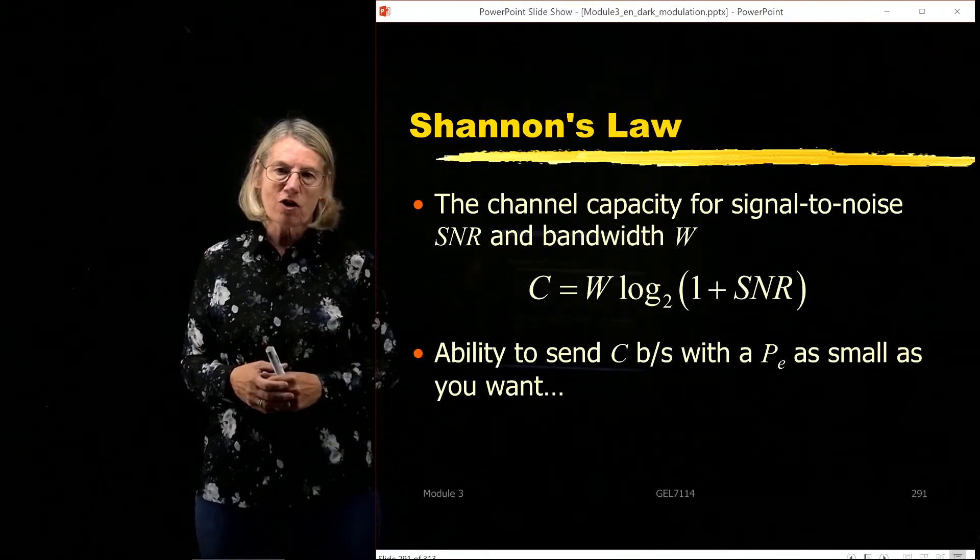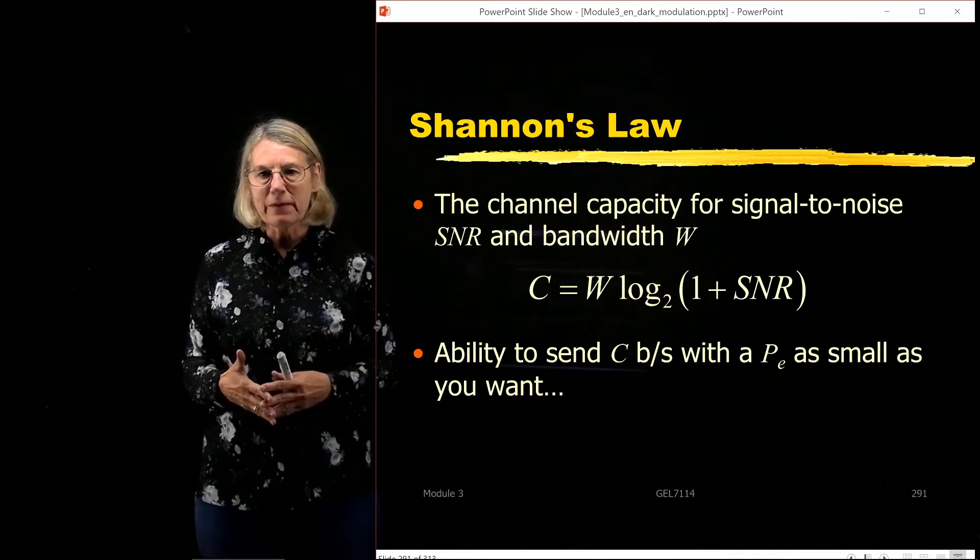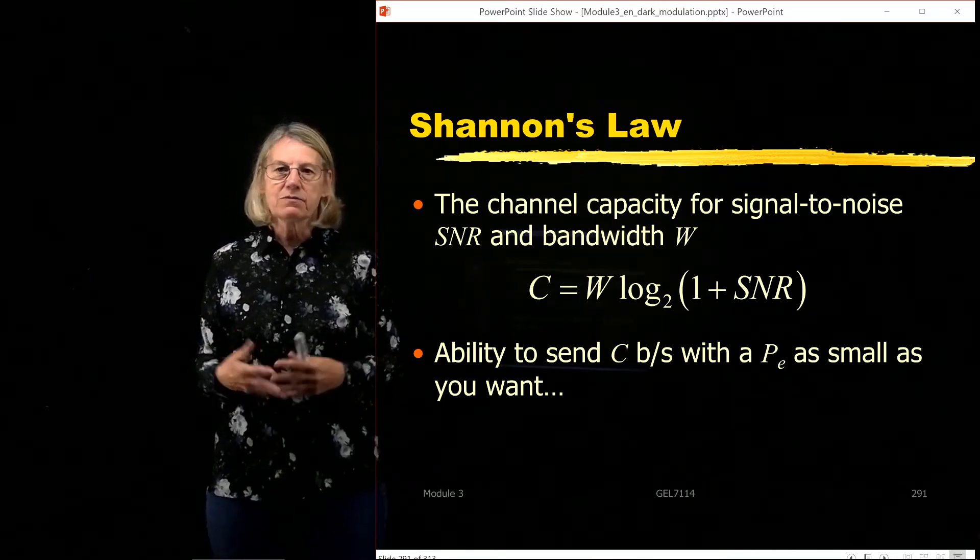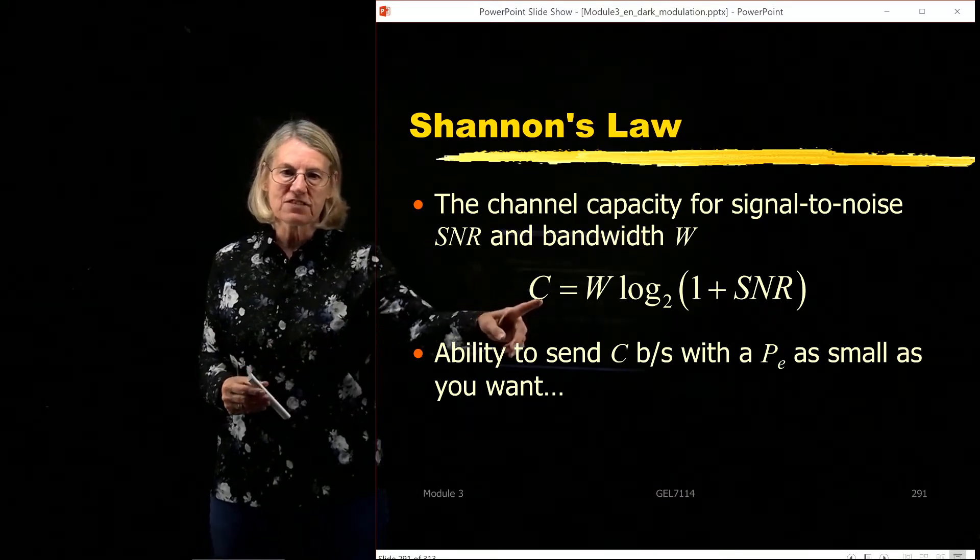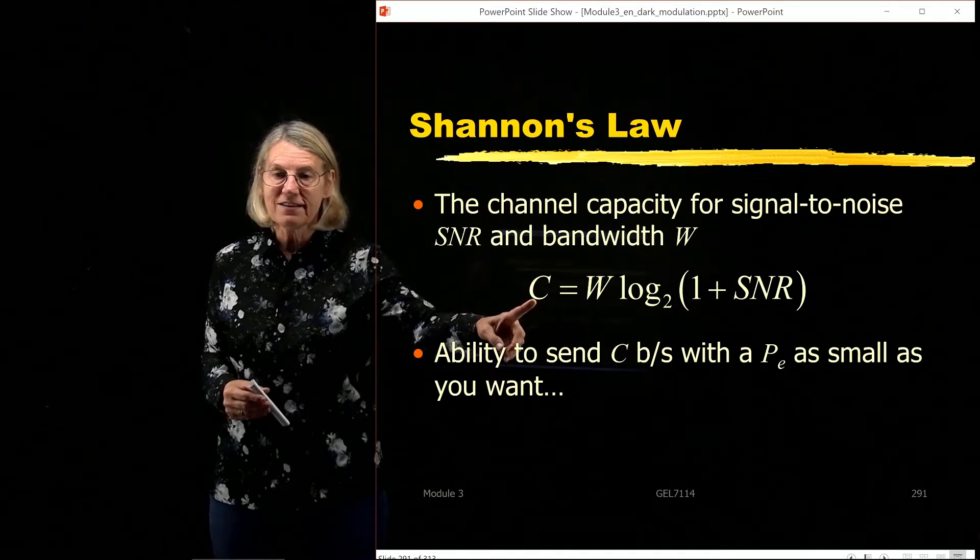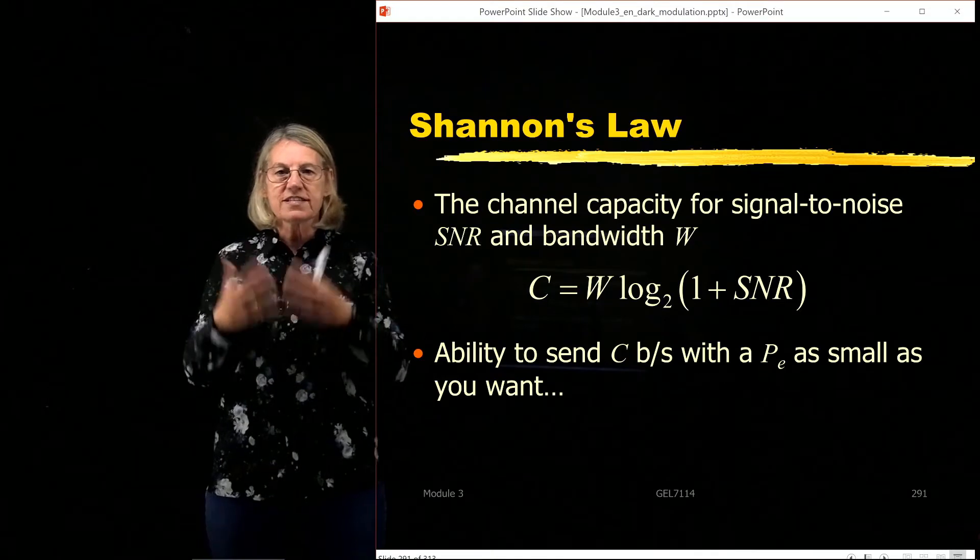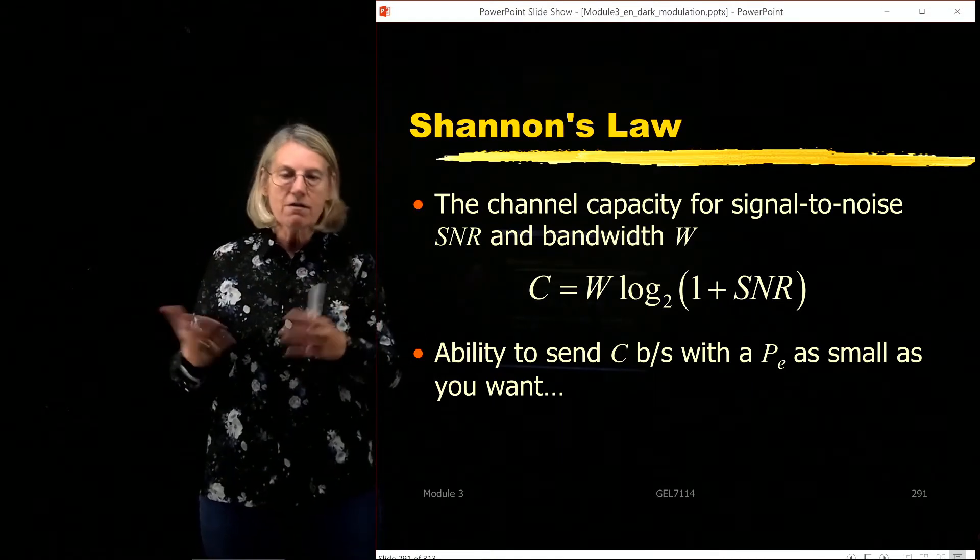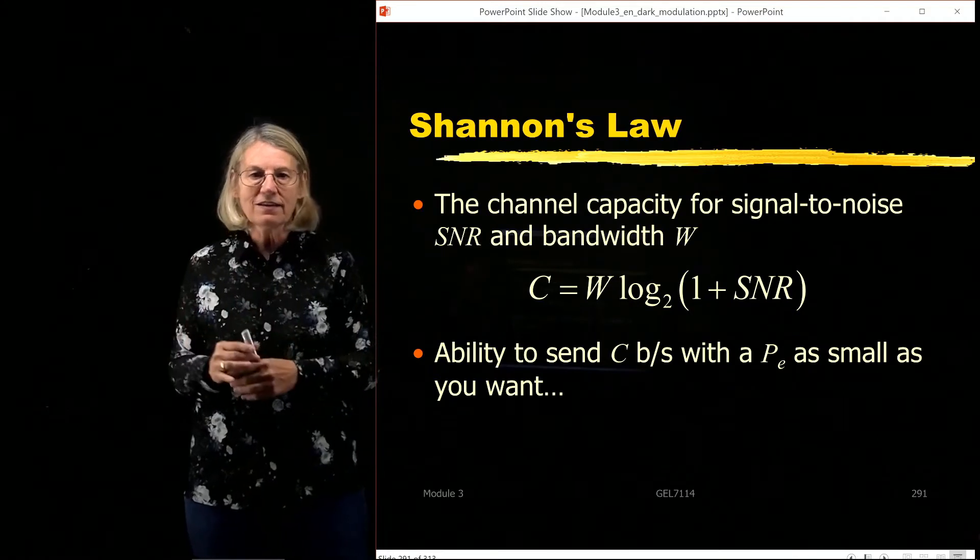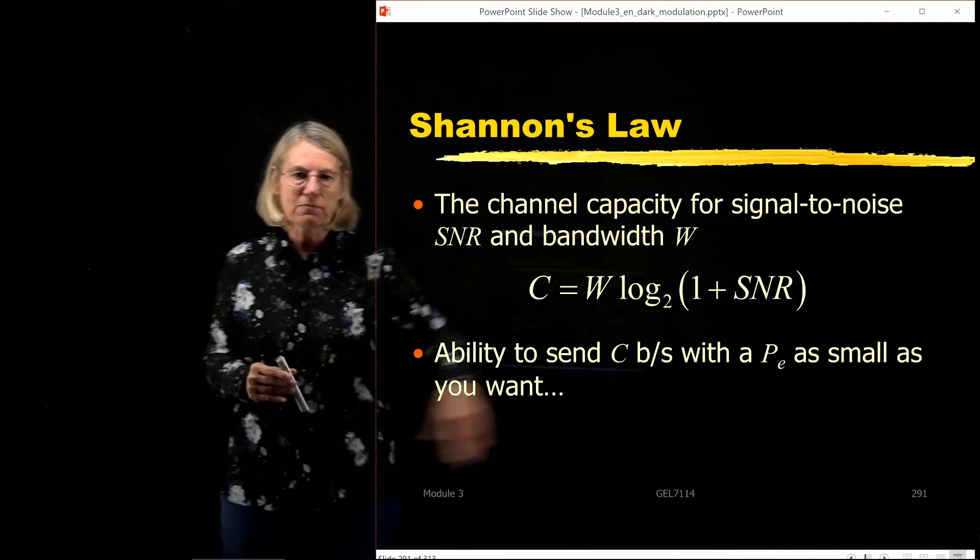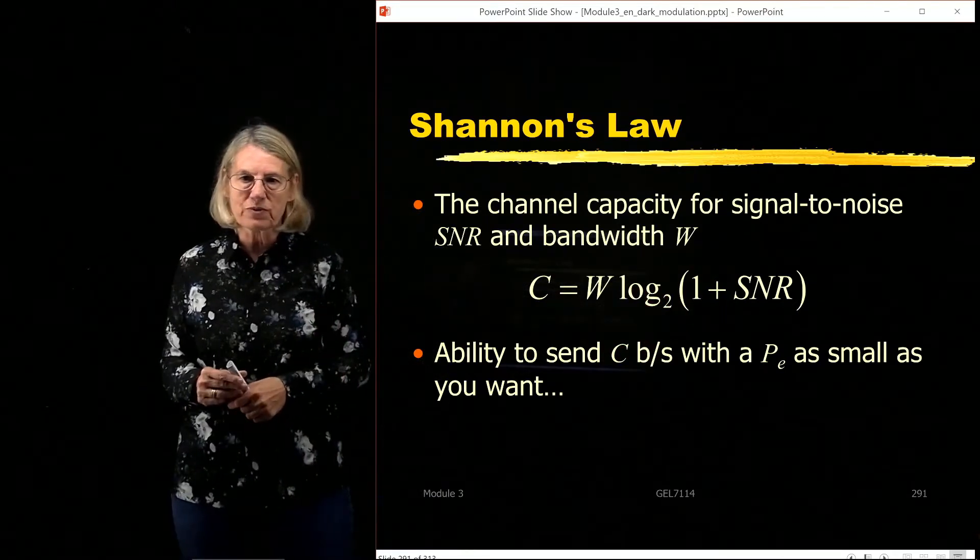Capacity is also known by the name of Shannon's Law. It's one of the most important developments in information theory. And we can state Shannon's Law very simply because it gives us the channel capacity, this is C in this equation, in a very simple form. So for a given channel with a signal-to-noise ratio SNR and a bandwidth of W, the capacity of the channel is given by W times the log 2 of 1 plus the signal-to-noise ratio.